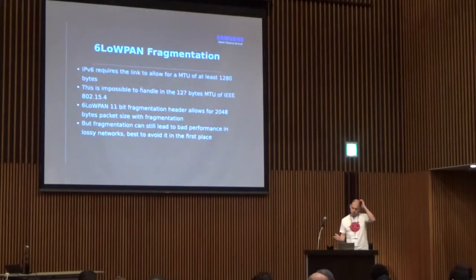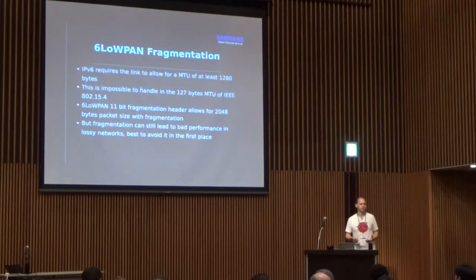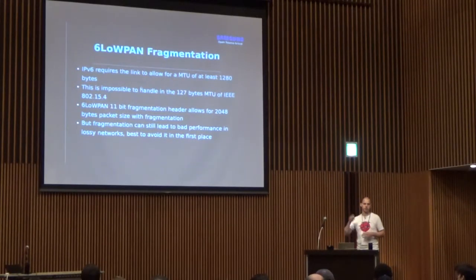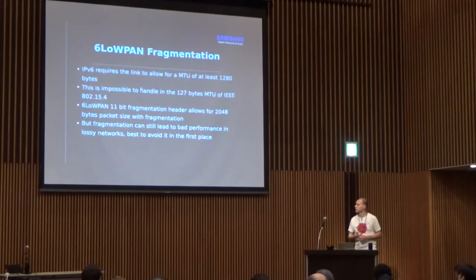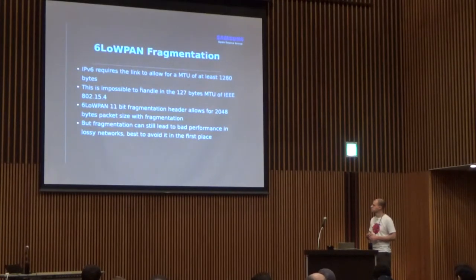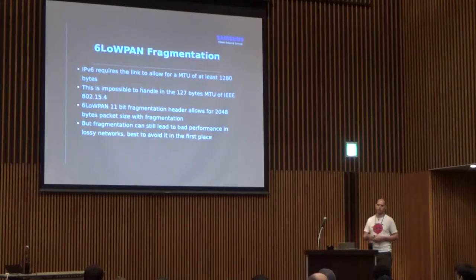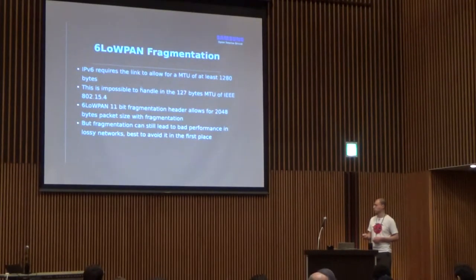On fragmentation: we have these small MTUs, so we bring back IPv6 fragmentation handled entirely in the adaptation layer — the normal IPv6 stack on Linux sees none of it. We have 11 bits for fragmentation, supporting up to 2048 bytes. But in these lossy networks, it's really not recommended to rely on fragmentation, as losing fragments hurts performance even more than you already have.